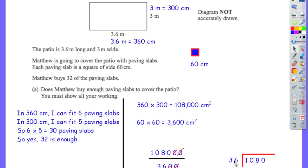The best way to do division on a non-calculator paper is the bus stop method — what you're dividing into goes inside the bus stop, and what you're dividing by goes outside. How many 36s fit into 1? None. Into 10? None. Into 108? Using 36, 72, 108 — three of them fit. Then how many 36s into 0? None, with nothing left over. So the answer is 30. That means 30 paving slabs fit into the patio. I've worked it out using two methods, and the final conclusion is that 32 is enough.